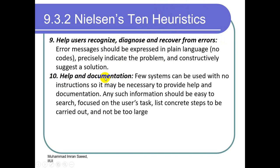Number ten: help and documentation. Very few complex software systems can be fully used without a user manual. If software is large or complex, we need documentation — help files, user manuals, help documents. Such information should be easy to search, focus on the user's task, list concrete steps to carry out, and not be too large. It must be a comprehensive document providing all information about the software: how to use it, how to troubleshoot, and how to recover from error states.